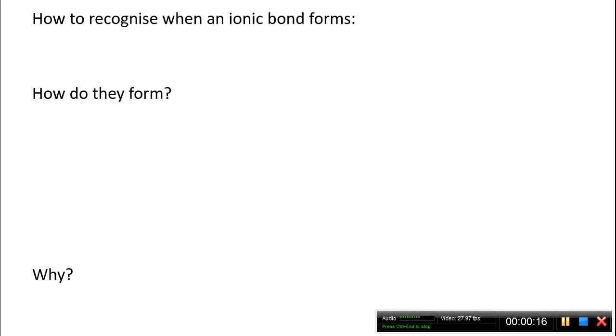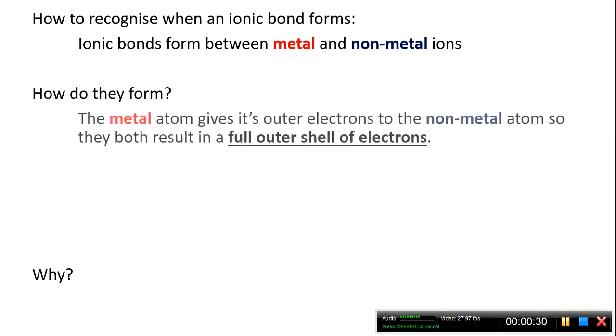So how do you recognize when an ionic bond forms? An ionic bond will always form between a metal and a non-metal ion. And as such, if there's a compound containing a metal and a non-metal, then it will be an ionic bond that's holding them together. So how do they form? Well, the metal atom gives its outer electrons to the non-metal atom.